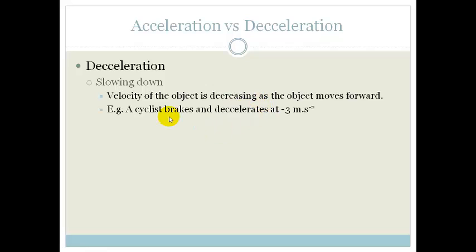So for example, a cyclist brakes and decelerates at minus 3 meters per second squared means the cyclist is still traveling in the same direction. He is just slowing down at minus 3 meters per second squared.